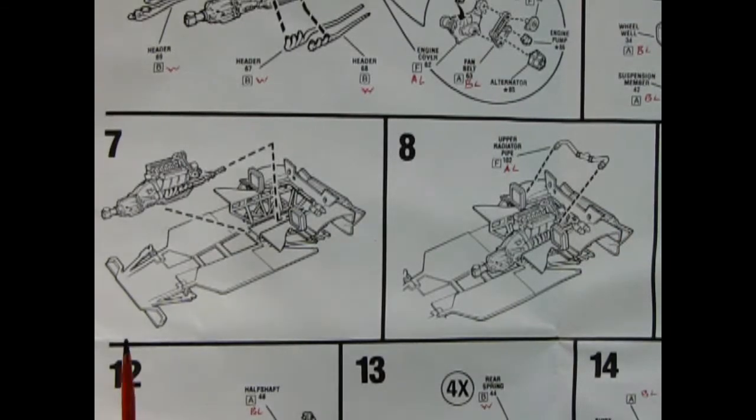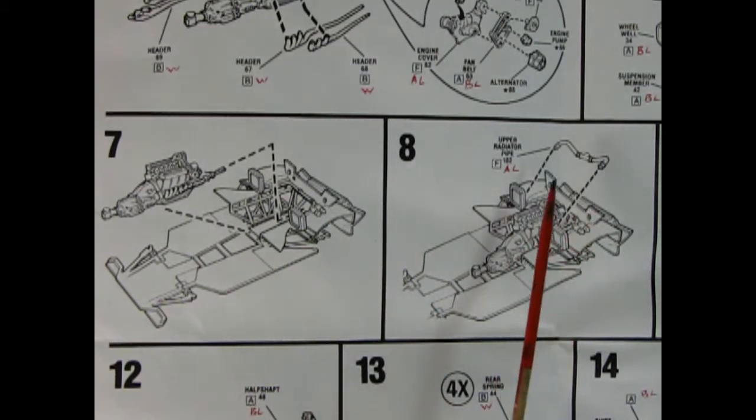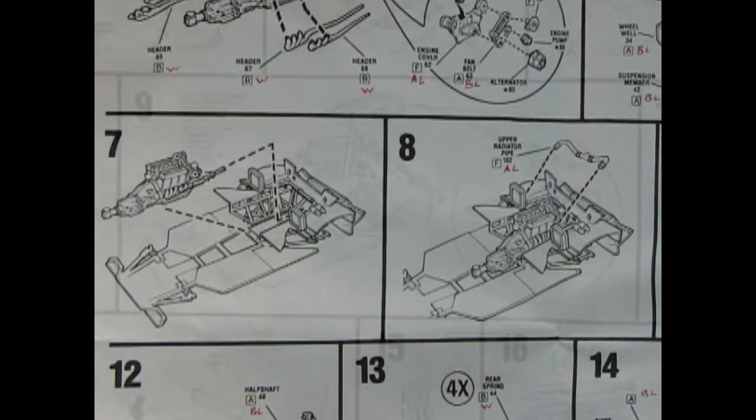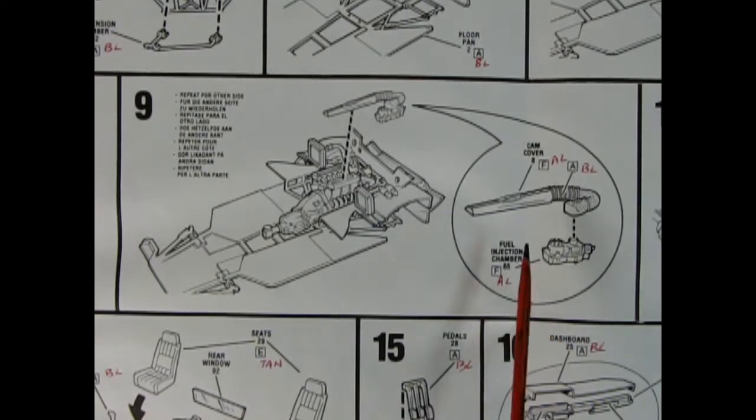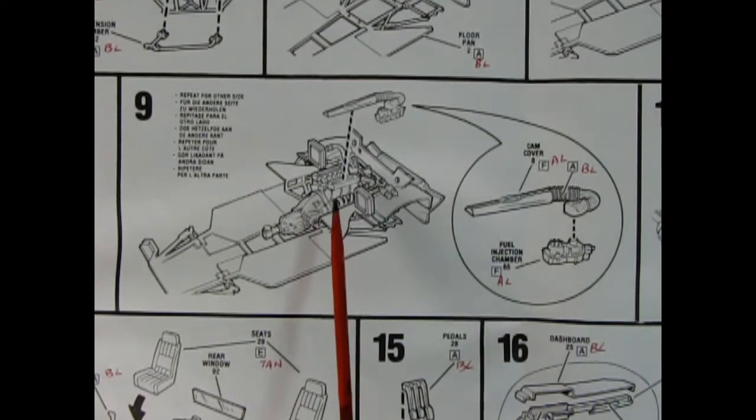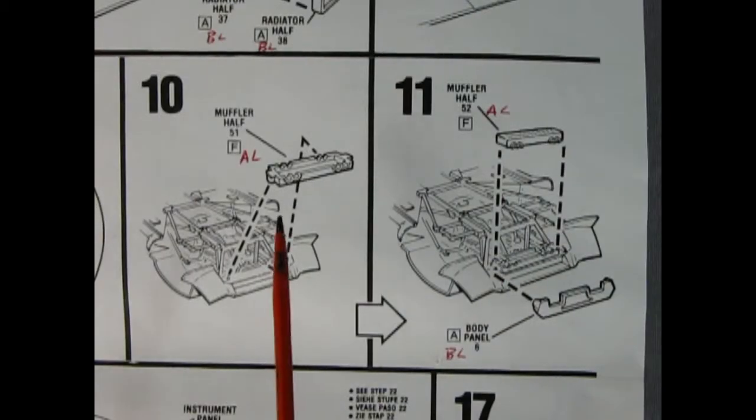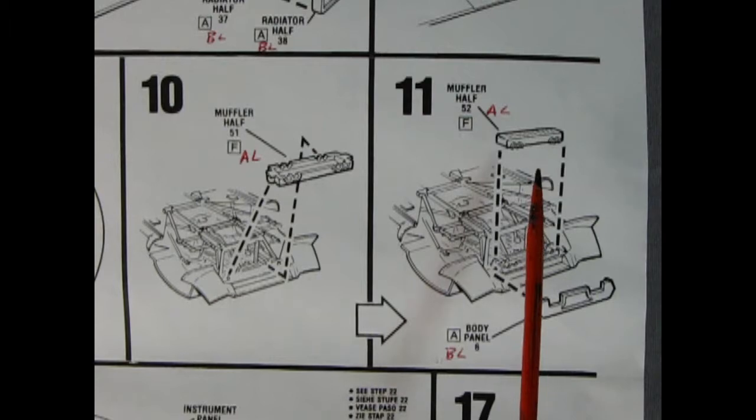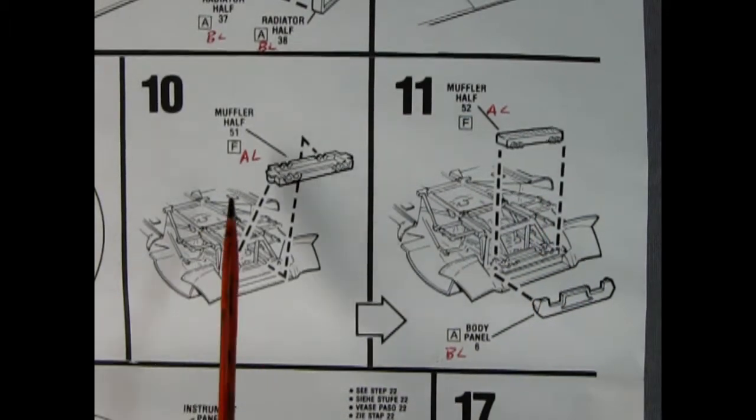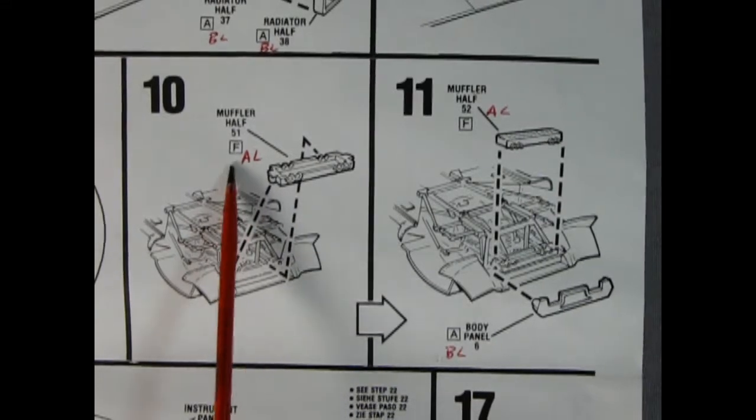Panel 6 shows the lower radiator pipe being glued in place as well as the dual coils. Panel 7 shows our V12 engine being dropped into place and then panel 8 shows where the upper radiator pipe goes in relation to the little fans and the engine. Panel 9 shows the cam cover and fuel injection chamber being glued together and then being dropped on top of the engine. Panel 10 shows the installation of the lower muffler half and then panel 11 shows the upper half being glued in place as well as this body panel here and it looks like Trevor actually marked down what the colors are so F is aluminum and that kind of neat stuff.